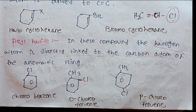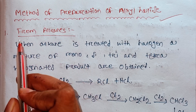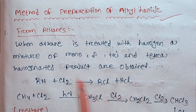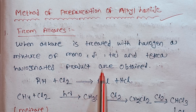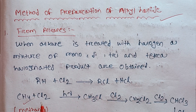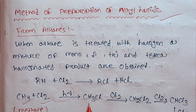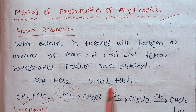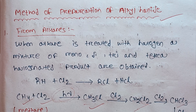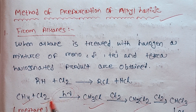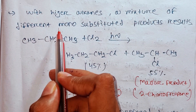The next topic is the preparation of alkyl halide — it is an important question. First, the preparation of alkyl halide: when alkyl is treated with halogen, a mixture of monohalide, dihalide, and tetrahalogenated products forms. When alkyl halogen is treated with chlorine in the presence of sunlight, you get monohalide, dihalide, and tetrahalogenated products. With higher alkyl, you see a mixture of different monosubstituted products.